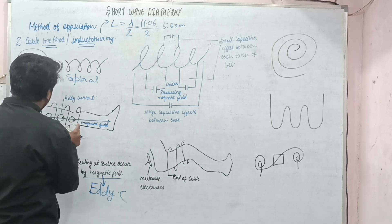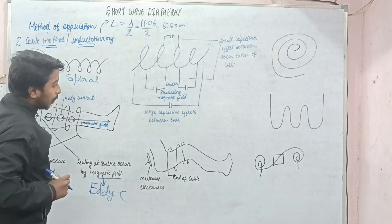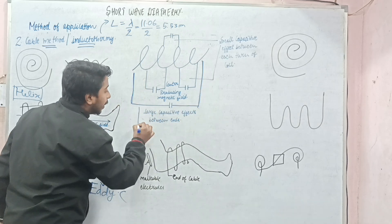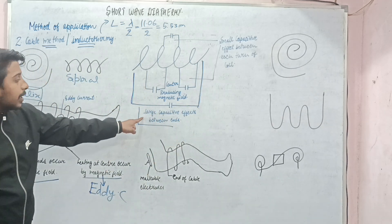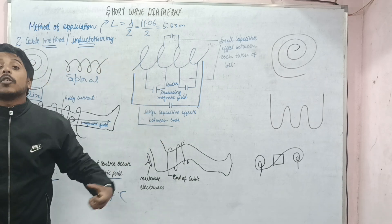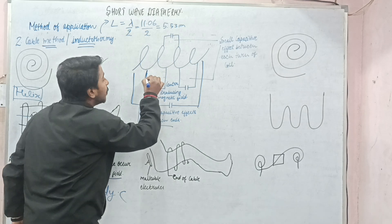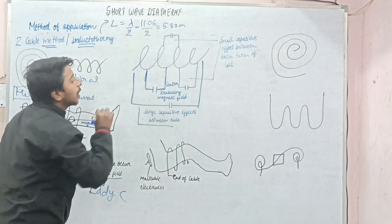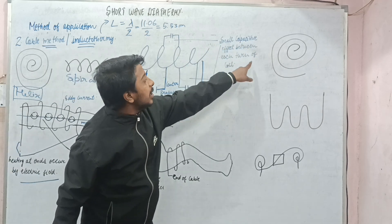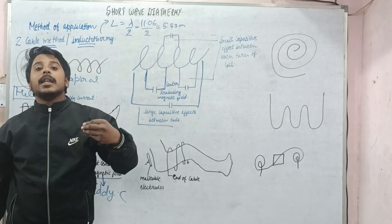The spiral cable acts like a large capacitor, with large capacitive effects between the ends, because the whole wire stores electrical charges which produce heating. The small spirals also act as capacitors, but small ones — small capacitive effect between each turn of the coil. Because it involves many coils, it acts as a large capacitor overall, while at the center it has a magnetic field for heating.